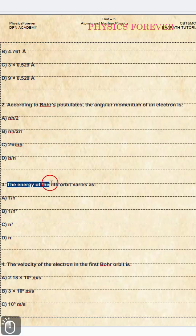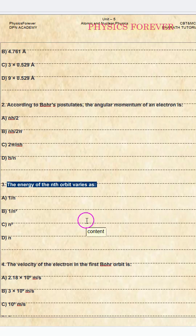Question number three: the energy of the nth orbit varies as? The correct option is B, 1 by n square.